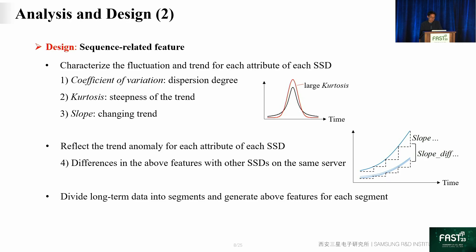We introduced three features: coefficient of variation represents the dispersion degree; kurtosis represents the stiffness of the trend; and slope represents the changing trend. For these three features, we also design differential features such as slope difference to reflect the trend difference from other SSDs on the same server, so that anomalies are easier to capture. In addition, since the trend may have multiple changing stages, the long-term data is divided into segments and these features are generated separately.